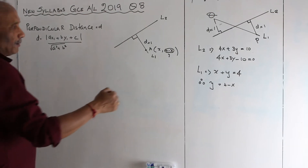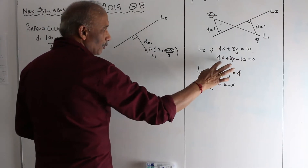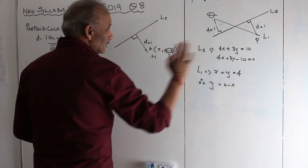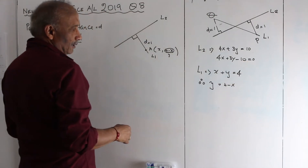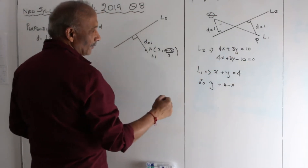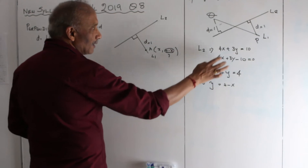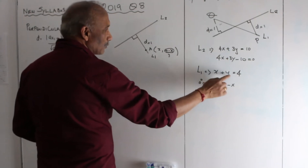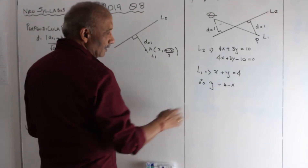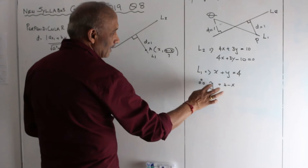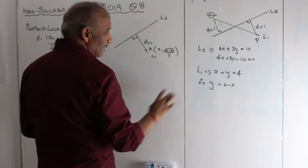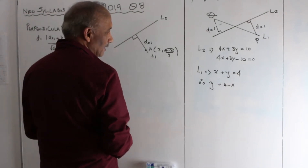I will calculate. 4X plus 3Y minus 10 equal to 0. L1 and the equation: X plus Y equal to 4. That is, Y is equal to 4 minus X. This is X and Y.